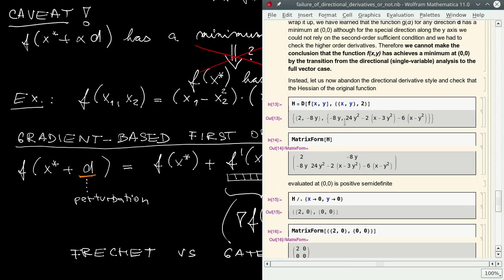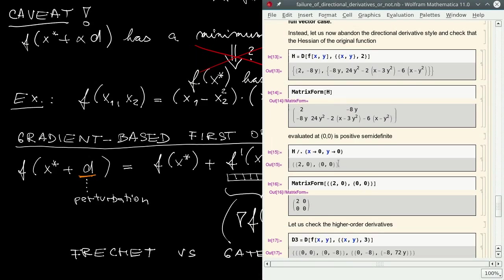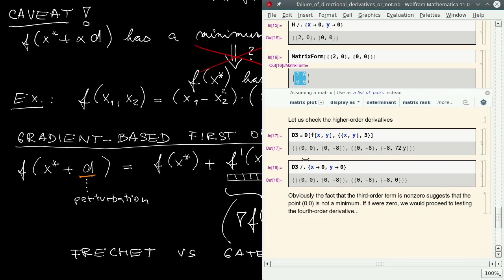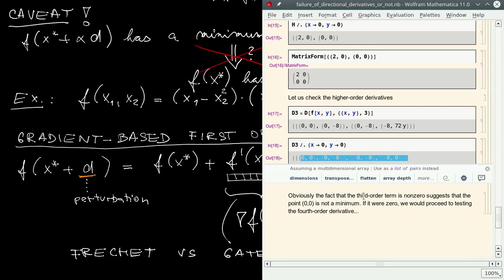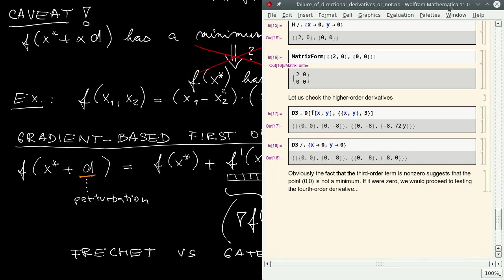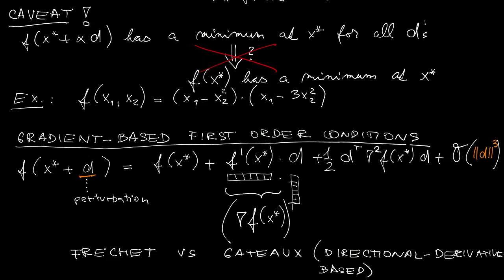And finally let's have a look at how the Hessian looks like in this case. It's obviously singular. So as we did in the scalar case, we analyzed the higher order terms. Here we see that third order derivatives are non-vanishing and therefore we can conclude that the function does not have a minimum at the origin.